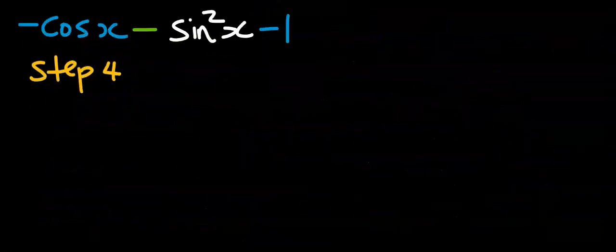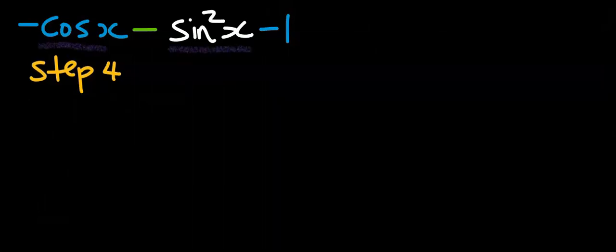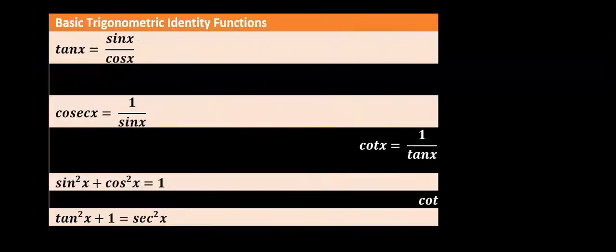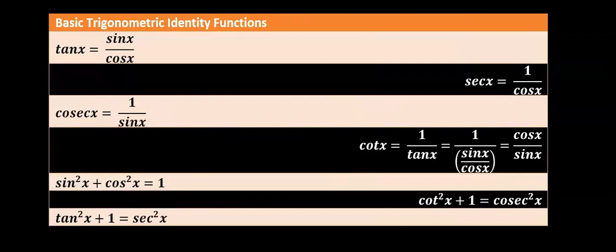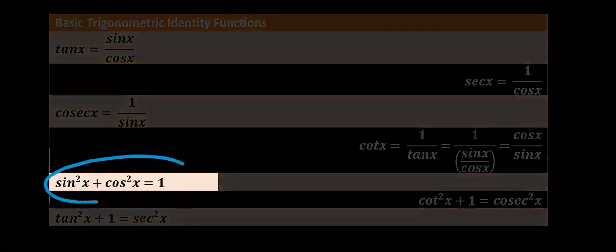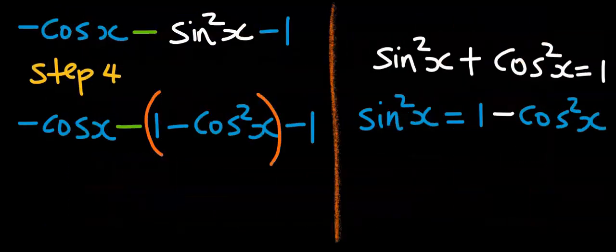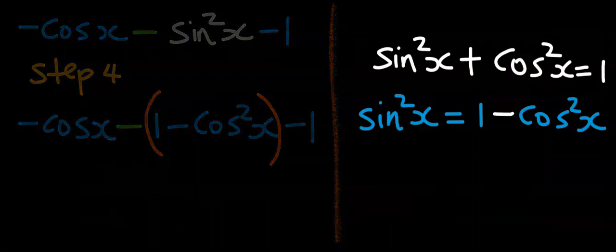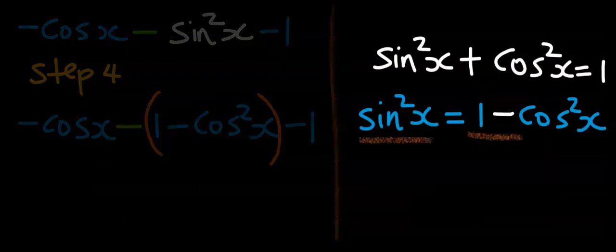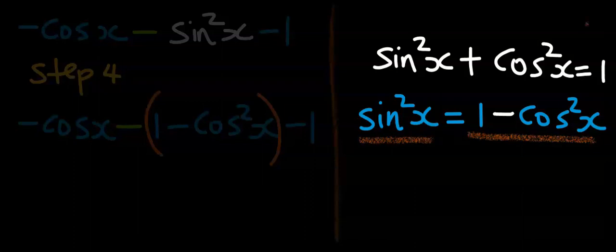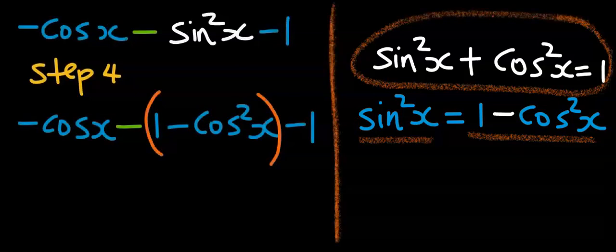In step number 4, I want to make this identical. Either to make it cos here and cos here or this to be sin and this to be sin. To achieve this, from basic trigonometric identity functions, sin squared x plus cos squared x is equal to 1. Hence, in step number 4, instead of sin squared x, I will now write 1 minus cos squared x, which we obtained from this identity by making sin squared x the subject.